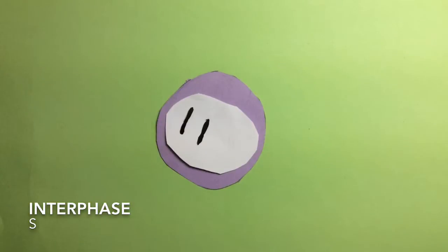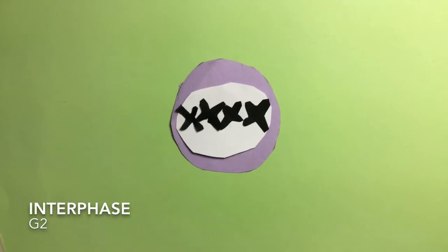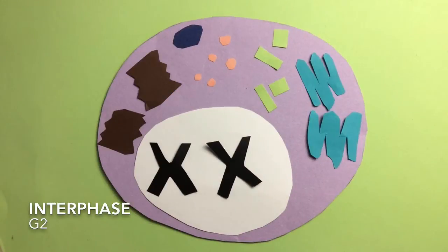During G1 phase, the cell grows and carries out its usual cellular functions. In the S phase of interphase, the cell makes copies of DNA, creating sister chromatids. The next phase is the G2 phase.